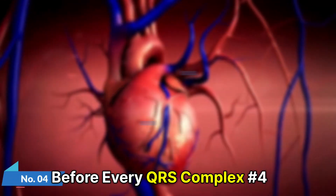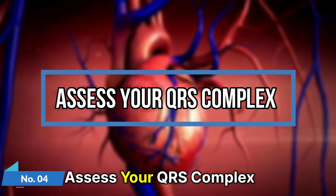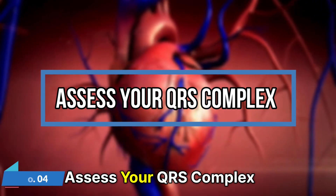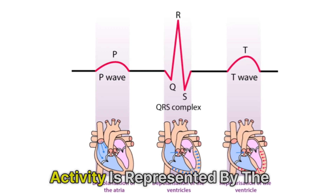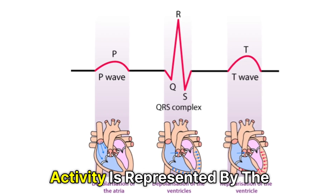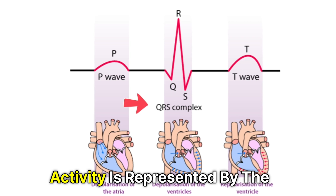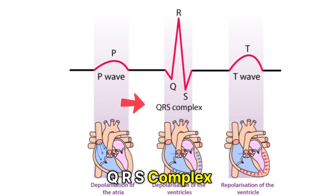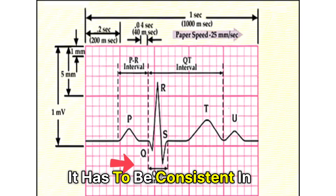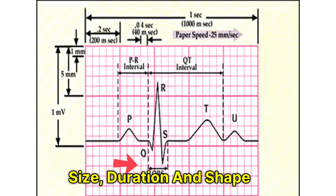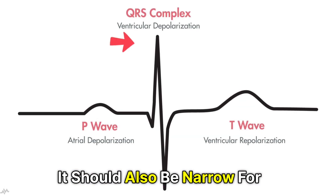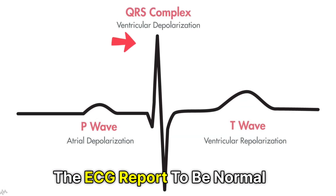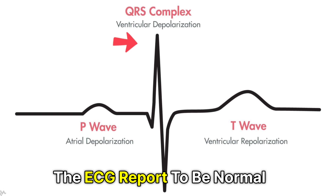Number 4: Assess your QRS complex. The ventricle's electrical activity is represented by the QRS complex. It has to be consistent in size, duration, and shape. It should also be narrow for the ECG report to be normal.